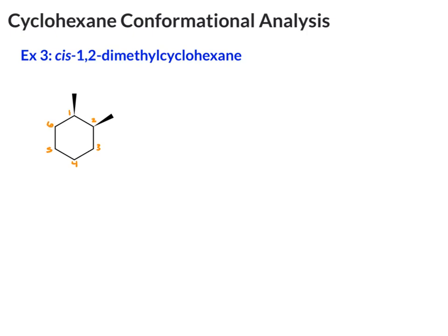Now draw both chair conformations. Find your reference point. Again, I think consistency is key, so if you always make carbon-1 this carbon, then you're consistently going to be correct. It doesn't have to be that carbon, just be consistent. So here is carbon-1 and number clockwise.